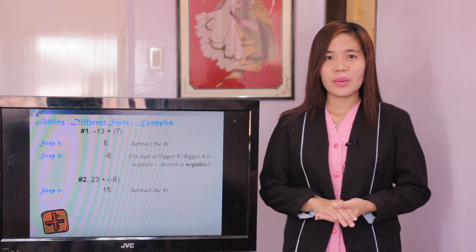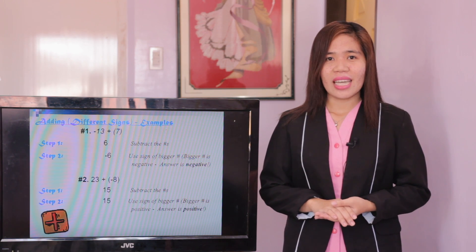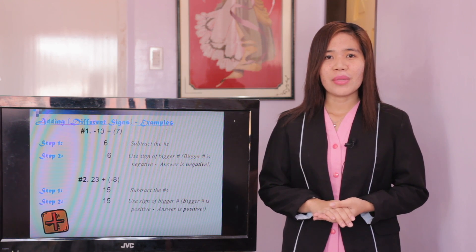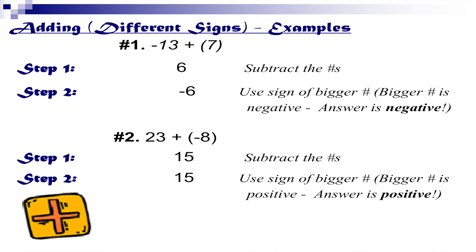For example number 2: positive 23 plus negative 8. Step 1, subtract the numbers — 23 minus 8 equals 15. Step 2, use the sign of the bigger number. The bigger number is positive, so the answer is positive 15.